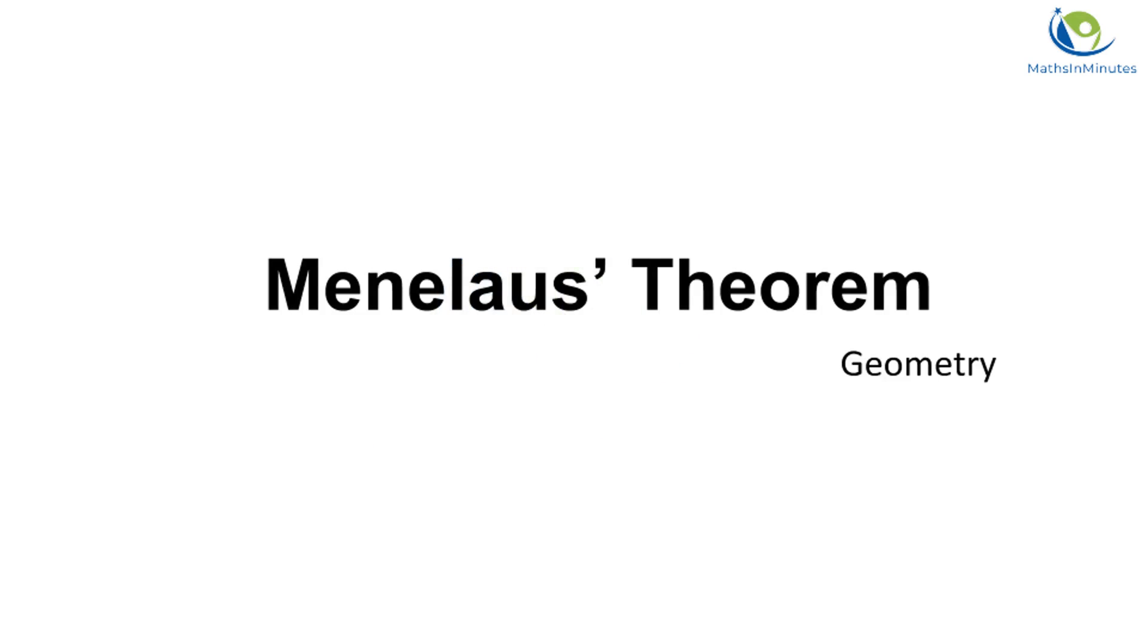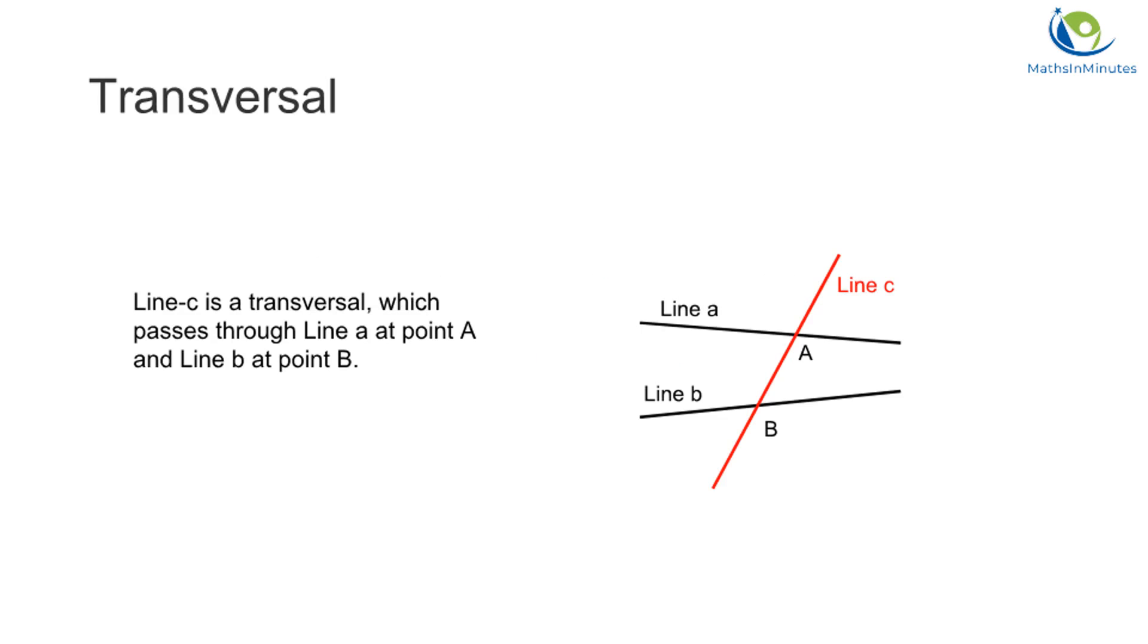Menelaus Theorem in Geometry. In geometry, a transversal is a line that passes through two lines in the same plane at two distinct points.